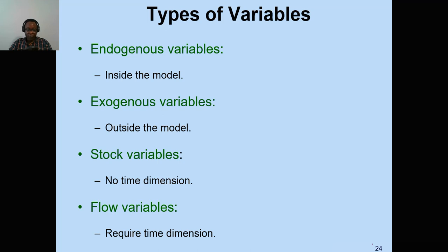We have different types of variables. An endogenous variable is a variable within a model that you can control. For example, in your studies, you can control the amount of time you spend studying. An exogenous variable is outside your control — for example, how difficult the exam is. A stock variable is one that does not depend on time and does not change continuously. A flow variable changes with time — for example, if you put money in a bank with interest, interest accumulates as time goes on.